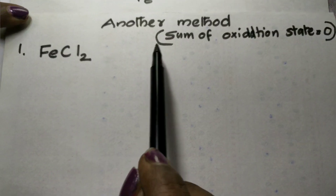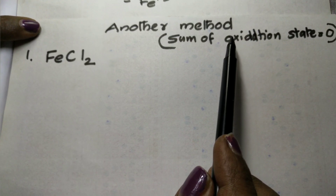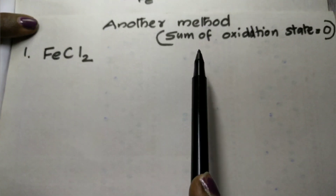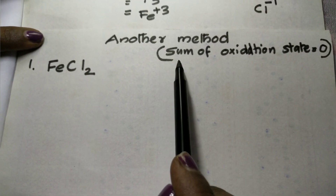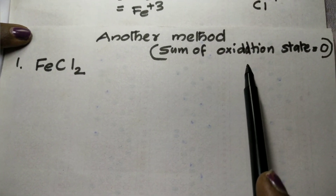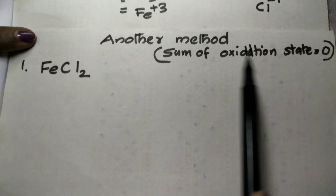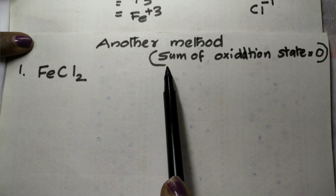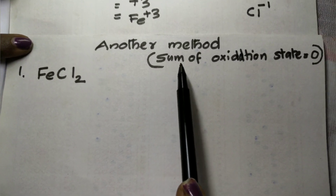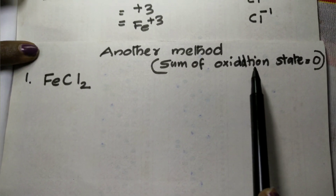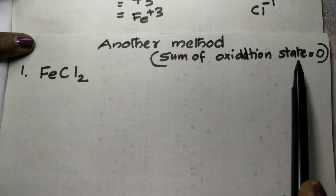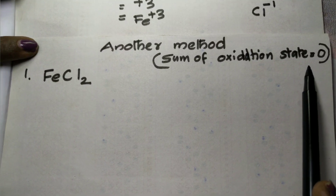The third method is: the sum of oxidation states is equal to zero. This is the rule we will apply.